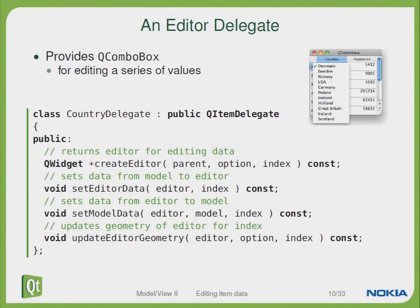So if the user wants to edit the item data, how can we do that? Let's take a look at a small editor delegate. For instance, we would like to provide a combo box for editing a series of values. On the right side you can see a small example of this combo box displaying some country strings.